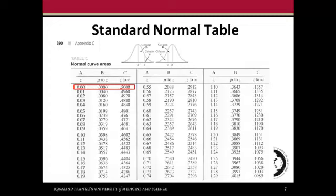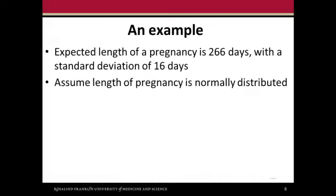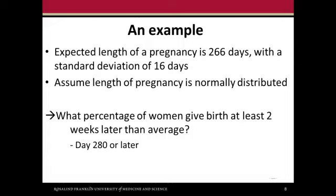This might seem a little bit abstract, so let's work through an example. The expected length of pregnancy from some data here is 266 days with a standard deviation of 16 days. We're going to assume that the length of pregnancy is normally distributed. Why might we be interested in this? We might want to know what percentage of women give birth at least 2 weeks later than average. That's 14 days later than day 266, so we're interested in day 280 or later. Let's go and work through this example.